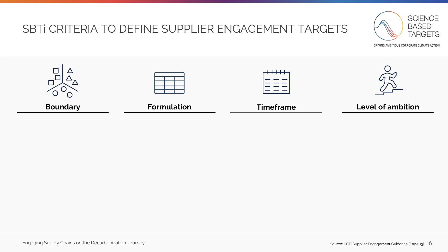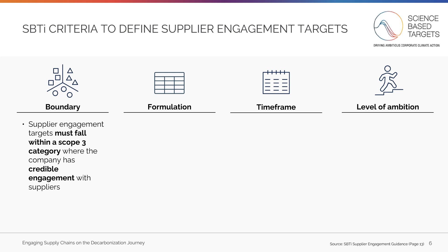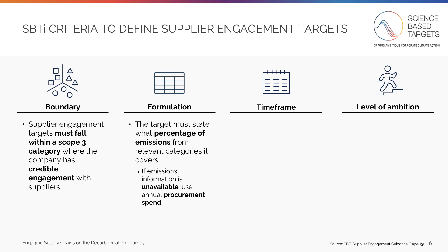If you are considering the supplier engagement method, you must satisfy four criteria. First, in terms of boundary, the supplier engagement target must fall within a Scope 3 category where your company has credible engagement with suppliers. Credible engagement refers to categories where it would be reasonable to assume your company has the power and standing to influence suppliers. Second, in terms of formulation, the target must break out the percentage of emissions covered within each category. Categories are defined in the Greenhouse Gas Protocol standard linked in the description below.